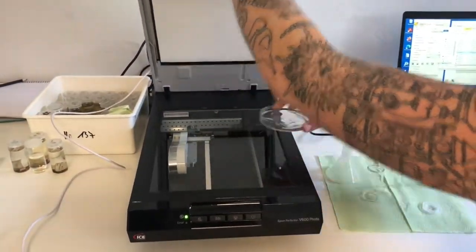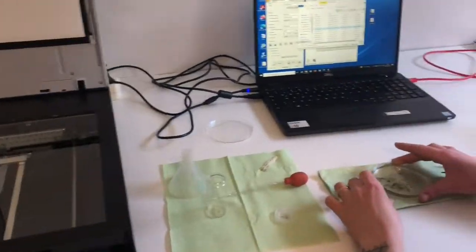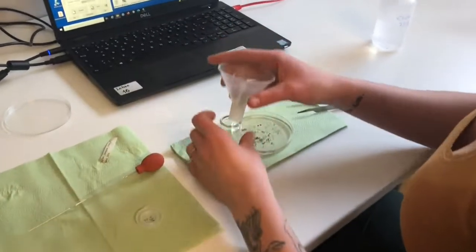After the scanning is over, we transfer all animals back to the vial by flushing them from the petri dish.